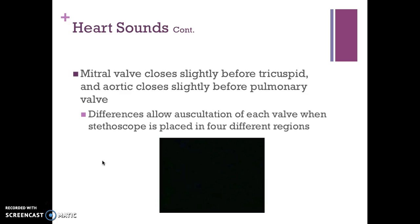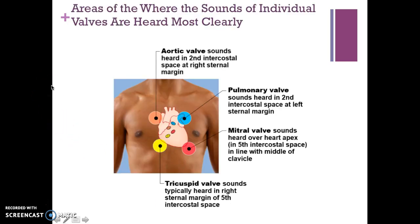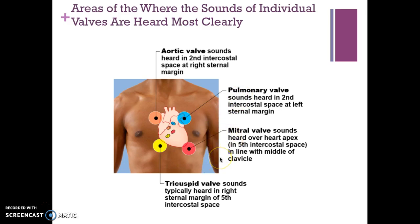The differences allow auscultation of each valve when the stethoscope is placed in four different regions. This slide shows the areas of auscultation to hear the valves. Those going on to nursing will definitely need to know these areas. The aortic valve is heard in the second intercostal space at the right sternal margin. The pulmonic valve is heard in the second intercostal space at the left sternal margin. Mitral valve sounds are heard over the heart's apex — the fifth intercostal space in the midclavicular line. The tricuspid valve sounds are heard in the right sternal margin of the fifth intercostal space. You typically go aortic, pulmonary, mitral, tricuspid when you do your auscultation.